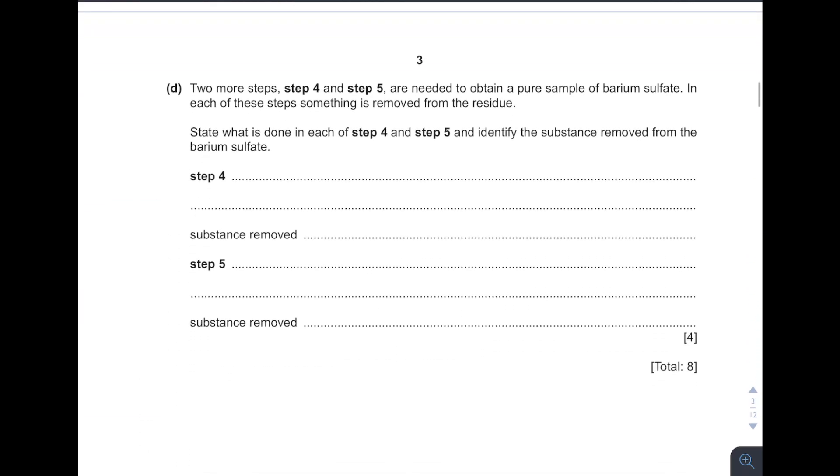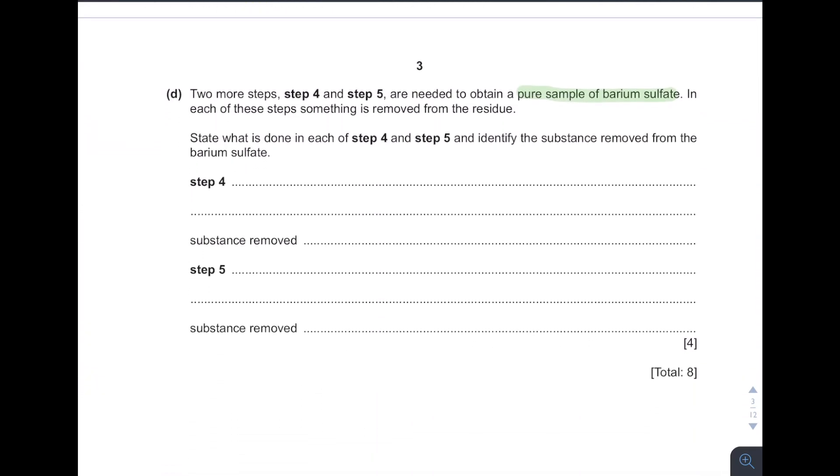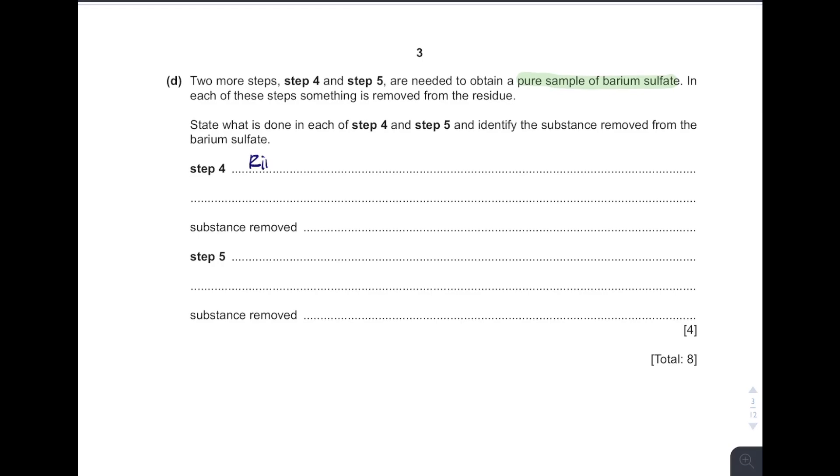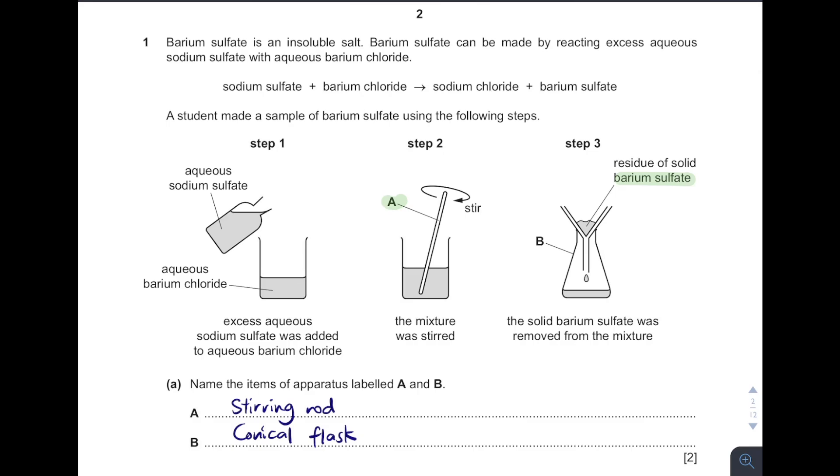And then next, see two more steps, step 4 and step 5 are needed in order to obtain a pure sample of barium sulfate. So what is done in each step 4 and 5 and identify the substance removed from the barium sulfate. To obtain a pure residue, remember, every single time after filtration is carried out, next step is always followed by rinse with distilled water. This is to remove the soluble impurities on the residue. We have to remove the excess sodium chloride.